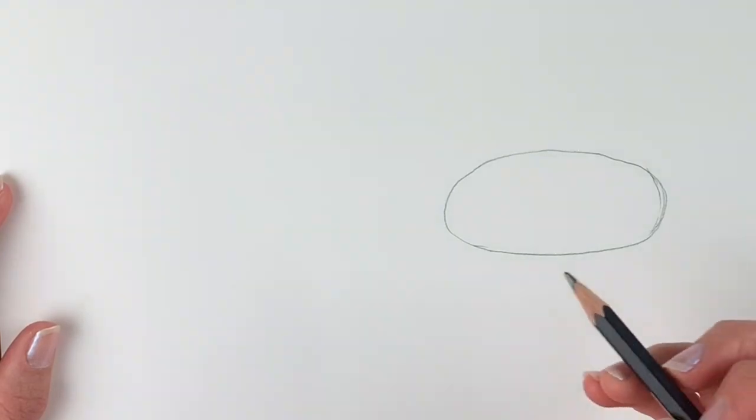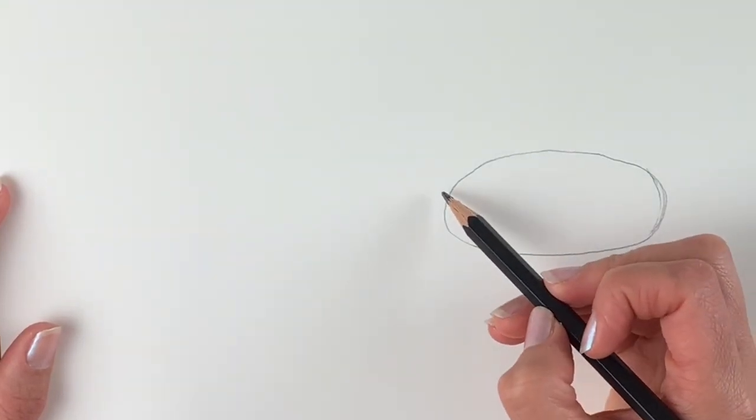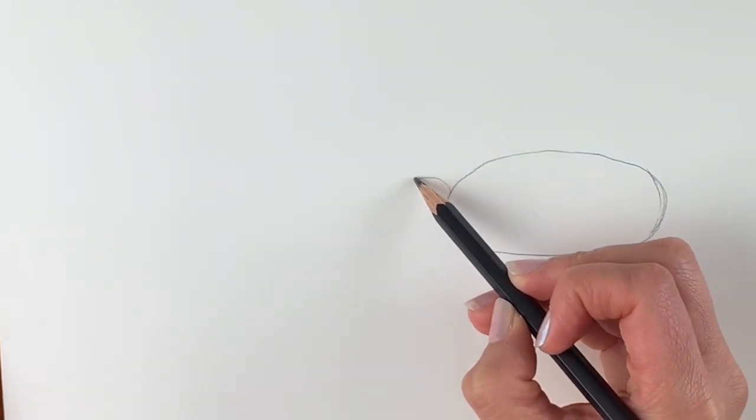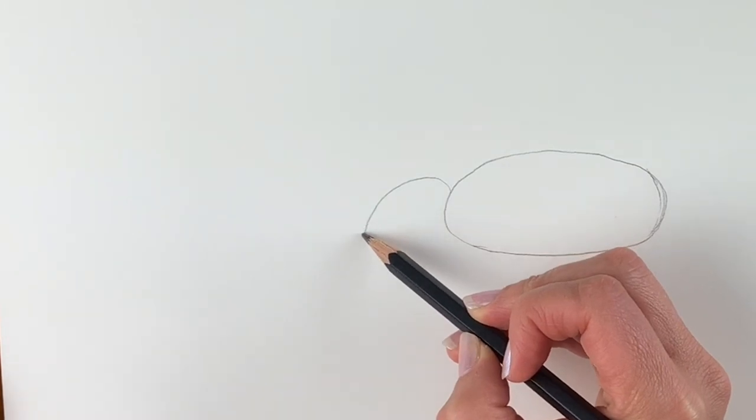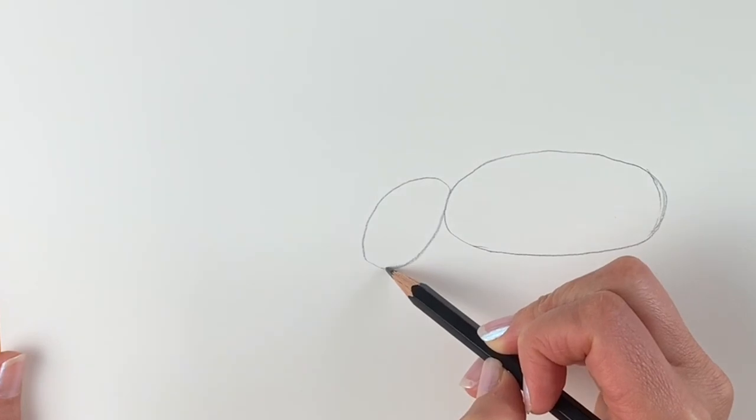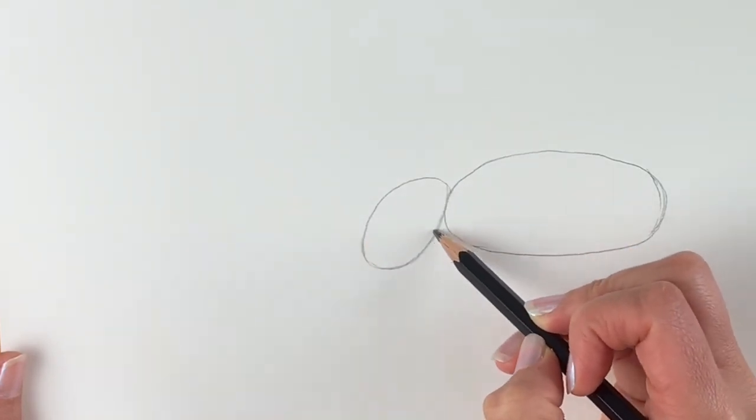Next to it we're going to be doing another oval shape, but it's slanted and it's also to the left hand side and slightly lower. So here we go, there's another oval shape just here. This is going to be the thigh of the fossa.